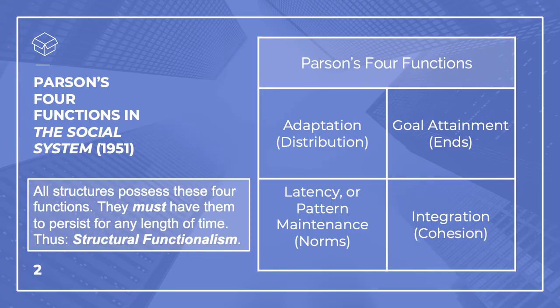We already spoke about social roles and action in the past video, and we already said they relate in an action system. But what are the properties of action systems? Following Weber and Durkheim, Parsons turns his attention to the general features of action systems. When people call him a structural functionalist — a term you'll hear a lot — they refer to the ways that he situates action. In order to continue to exist, any organic whole must be sustained through these four functions.